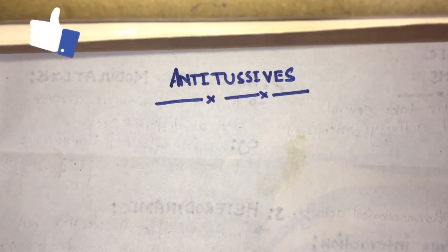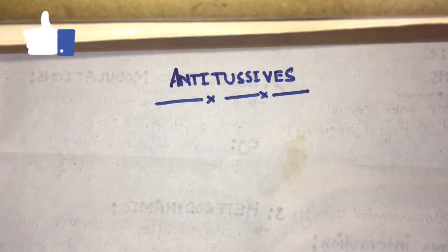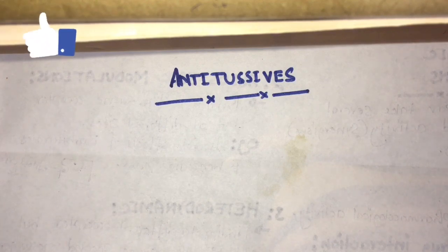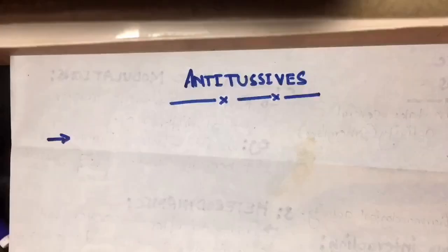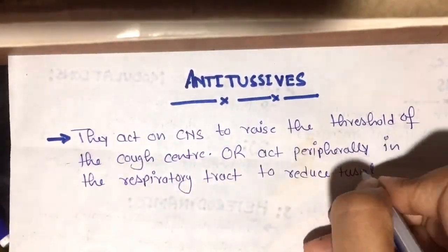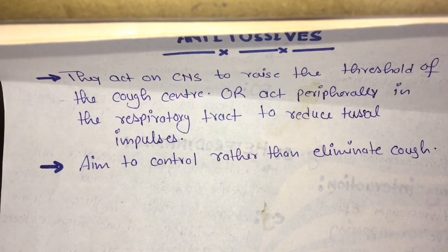Antitussives should be used for the dry, unproductive cough. They act on the cough center and the impulses are generated directly. The main aim of the antitussives is to control the cough rather than eliminate the cough — which is different from expectorants.